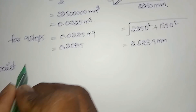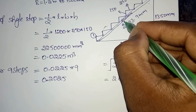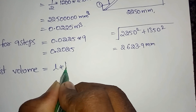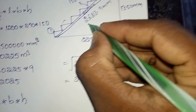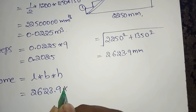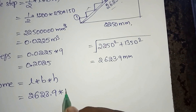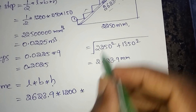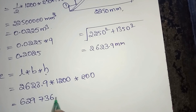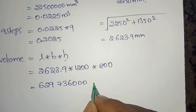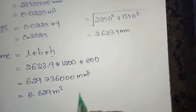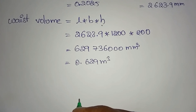Finding the waist volume. Waist volume is L×B×H. Length is 2623.9 mm, into B which is 1200 mm, and H thickness 200 mm. Value is 629,736,000 mm cube, converted into meter cube: 0.629 meter cube.